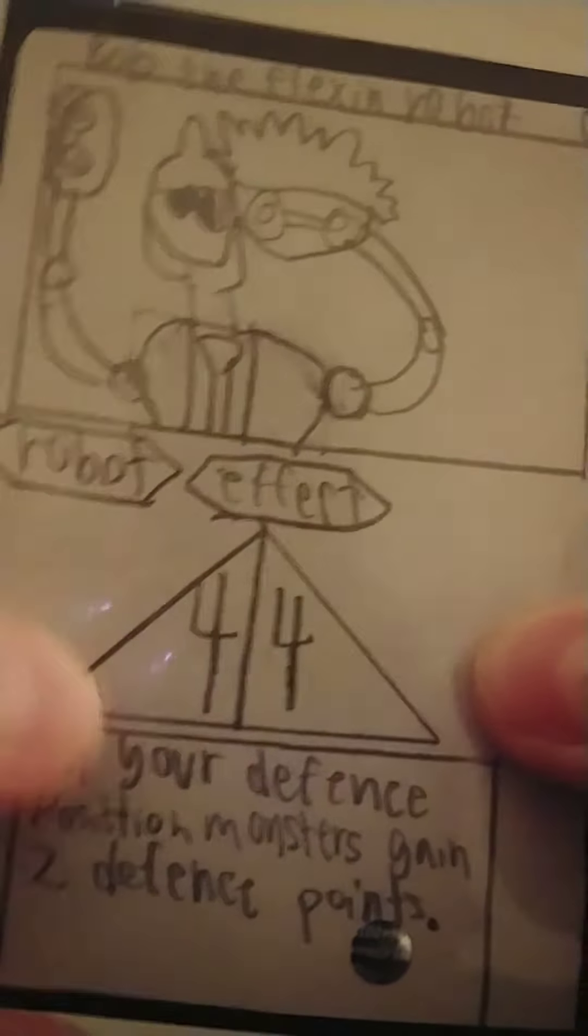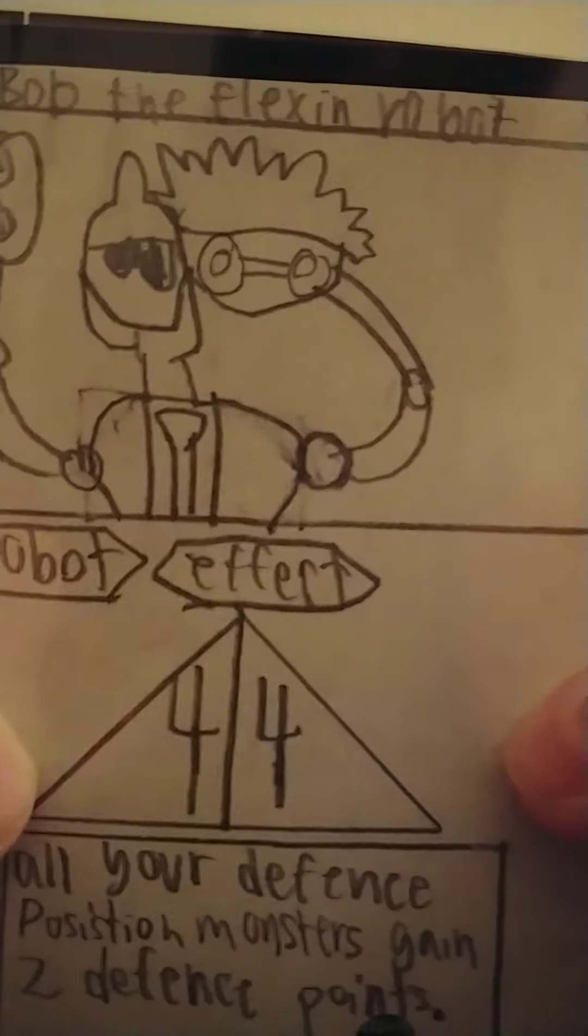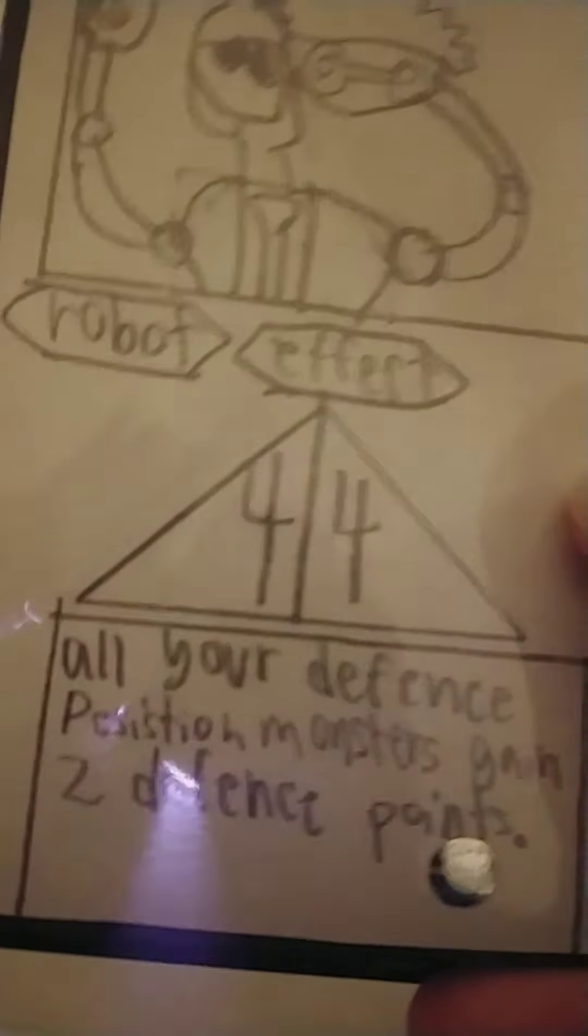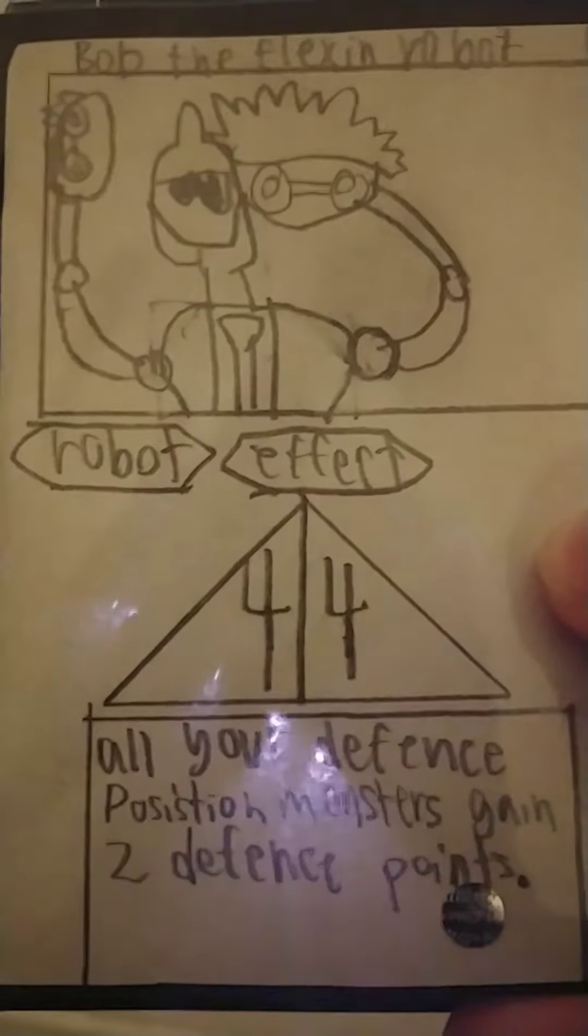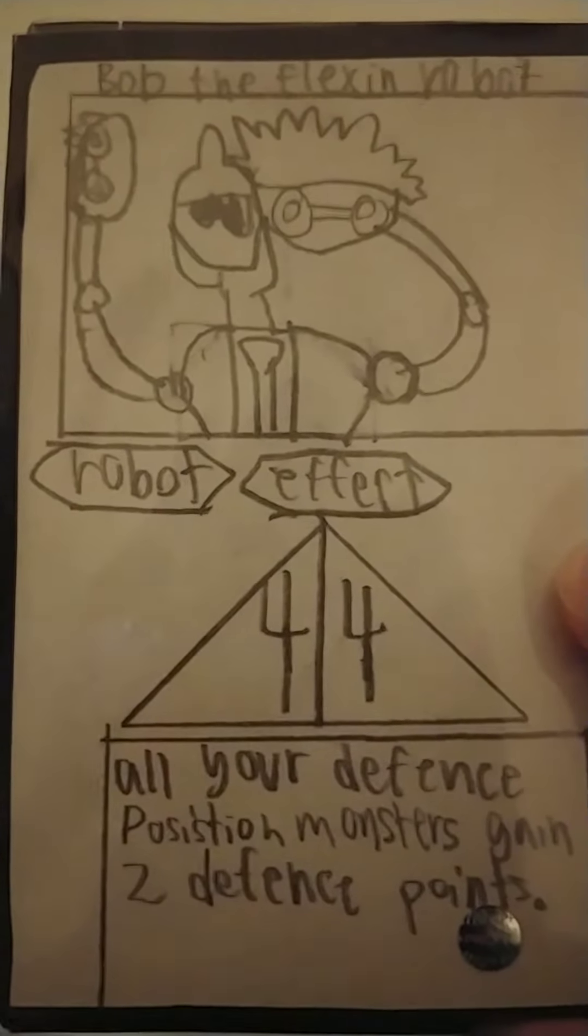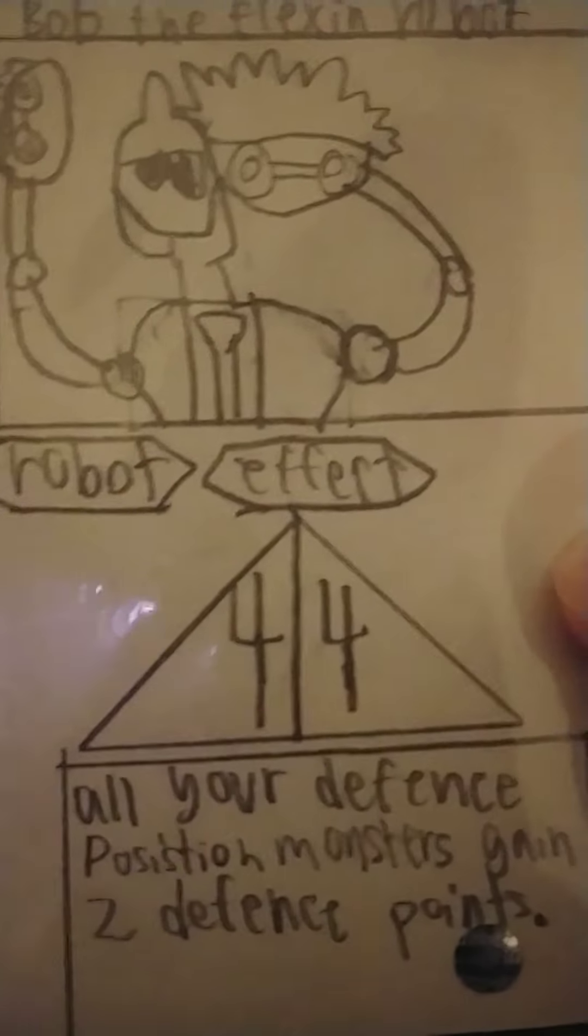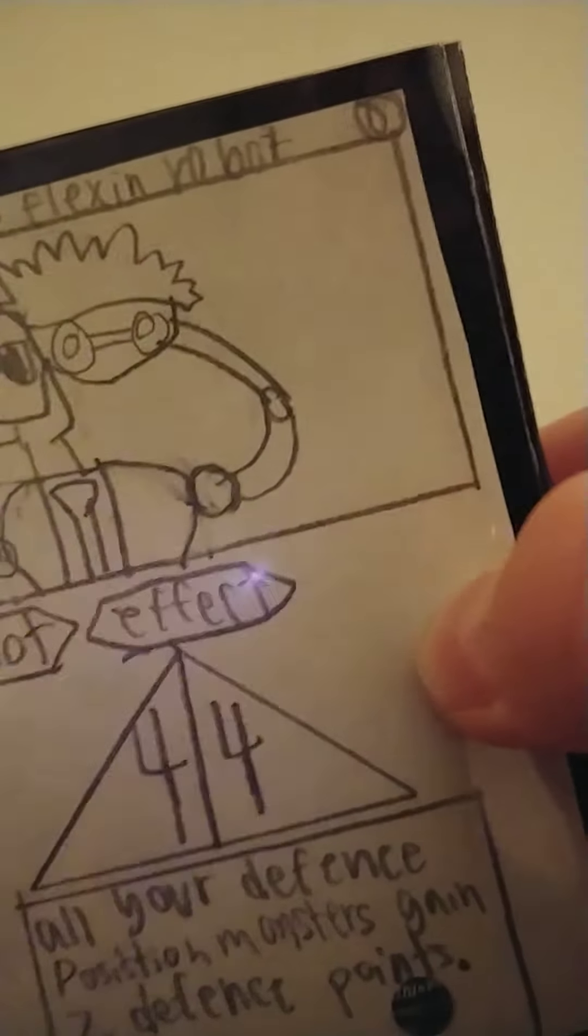This one I made today - Bob the Flexing Robot. Its effect is all your defense position monsters gain two defense points.